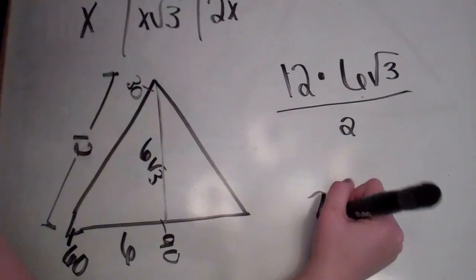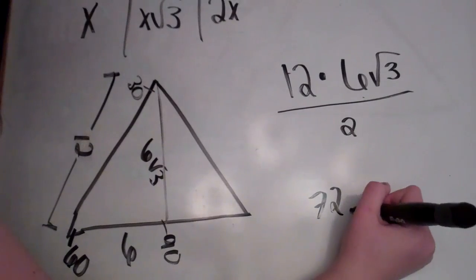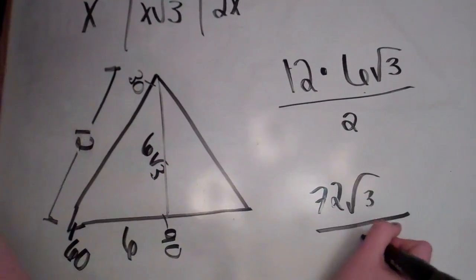12 times 6 is 72, square root of 3, divided by 2.